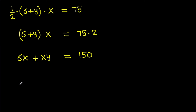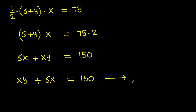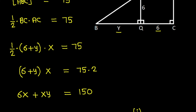So we have XY minus 6X equals 150. Suppose this is equation 1.